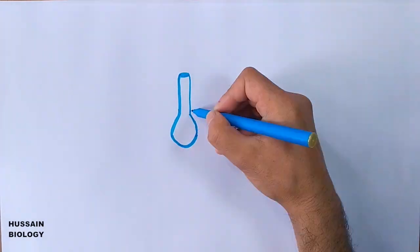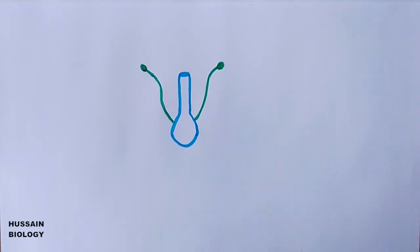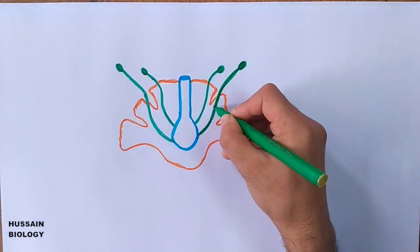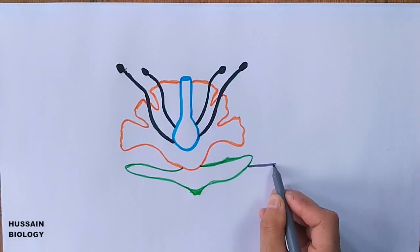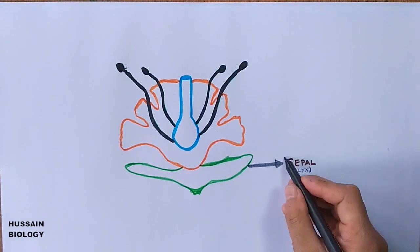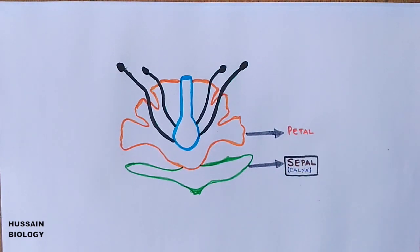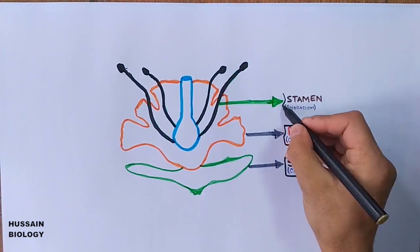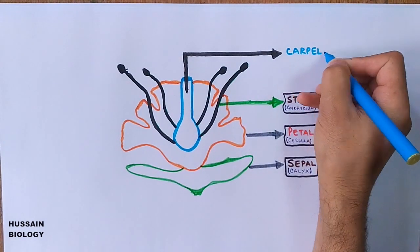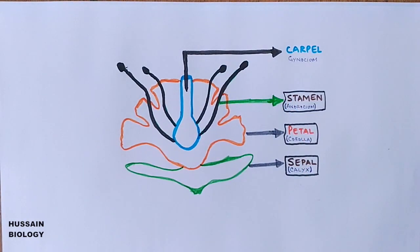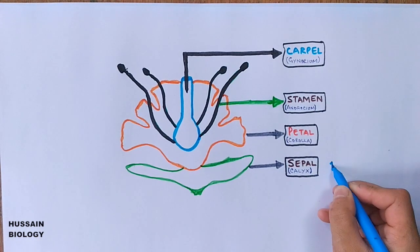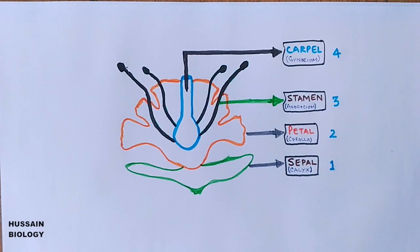Now let's understand flower development through diagrams. The flower has four important structures. The outermost is the sepal, also called the calyx. This is followed by the petal or corolla — the colored part of the flower. Then there is the stamen or androecium, the male part of the flower. And the innermost part is the carpel or gynoecium, the female part of the flower.